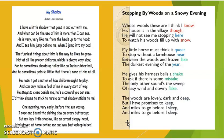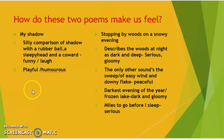In 'My Shadow,' we can see how there are silly comparisons — the shadow is compared to a rubber ball because it suddenly becomes big and suddenly becomes small. It's compared to a sleepy head, since you won't find your shadow before sunrise. The shadow is also compared to a coward. So this poem has a very playful, humorous, happy tone, because when you look at these words, they show you that the author's tone is playful or humorous.